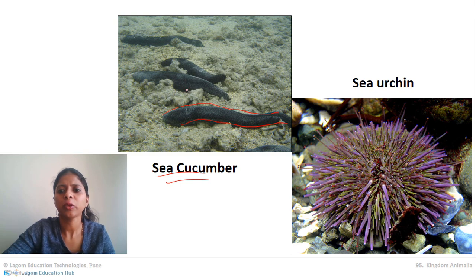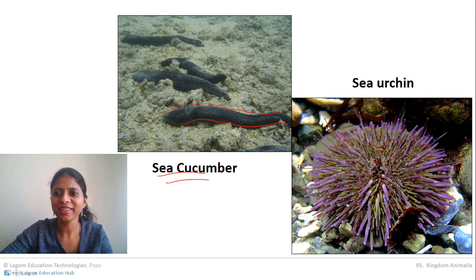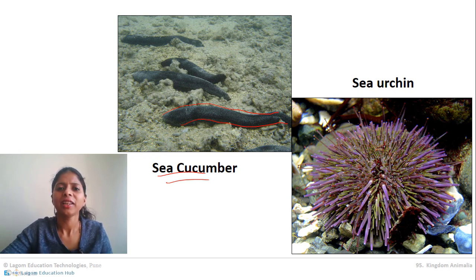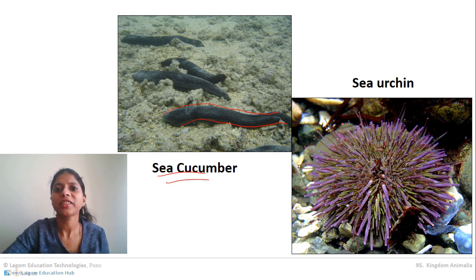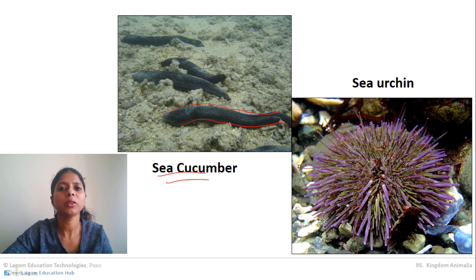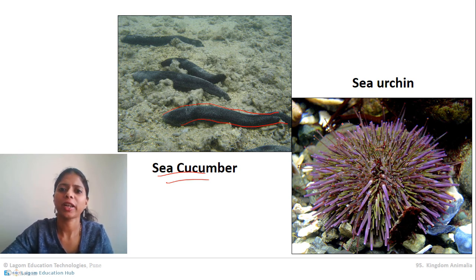Sea urchin is also an example — usually black in color, circular in shape with several spines projecting from it. In our Malvan seashore, near the Sindhudurga fort, there are several sea urchin species. These are examples of Echinodermata.